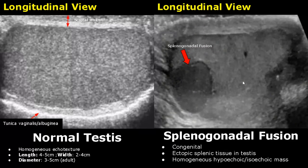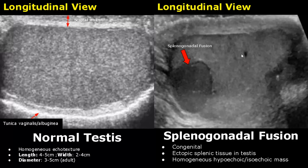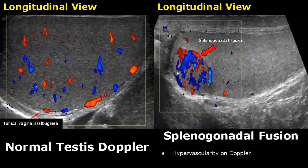Splenogonadal fusion is a rare congenital condition in which splenic tissue is found in the testis. You can see that it somewhat resembles splenic tissue — it is homogeneous and either hypoechoic or isoechoic to the testis. On color Doppler the splenic tissue will show hypervascularity. It is difficult to distinguish it from a testicular malignancy.